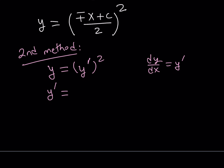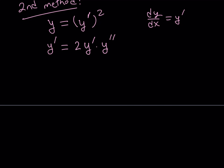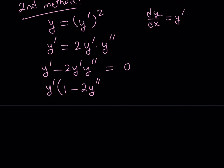If you differentiate the left-hand side you get y prime. The right-hand side uses the chain rule: we have something squared, so we bring the 2 down, lower the power, and multiply by the derivative of the inside. The derivative of y prime is y double prime, so we multiply by the second derivative and we're done with differentiation. Now we have y prime on both sides along with y double prime. Do not cancel out the y prime, because you'll lose roots. Let's subtract and set it equal to zero, and factor out y prime, giving us y prime times (1 minus 2y double prime) equals zero.